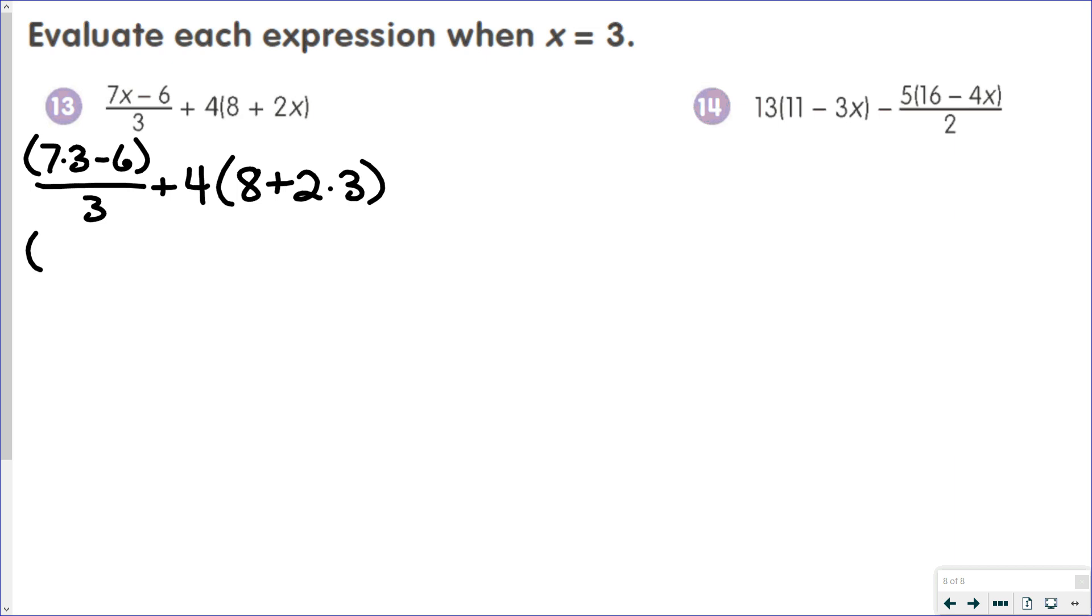7 times 3 is 21. 2 times 3 is 6. 21 minus 6 is 15. 8 plus 6 is 14. 15 over 3 is 5. And when you have 4 outside parentheses on 14 that tells you to multiply. 4 times 14 is 56. 5 plus 56 is 61.